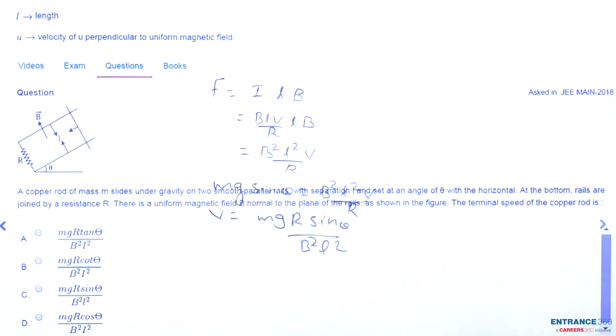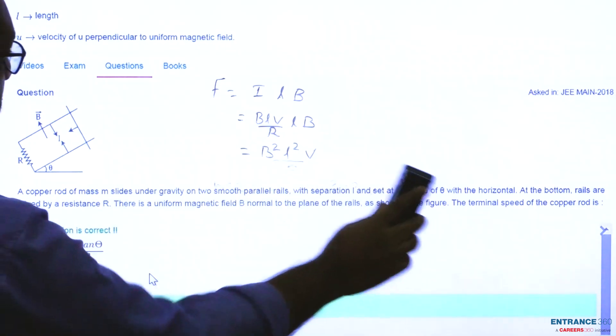Let's check the options. In terms of sin theta, we have one option that is C: MgR sin theta by B squared L squared, which is the right answer.